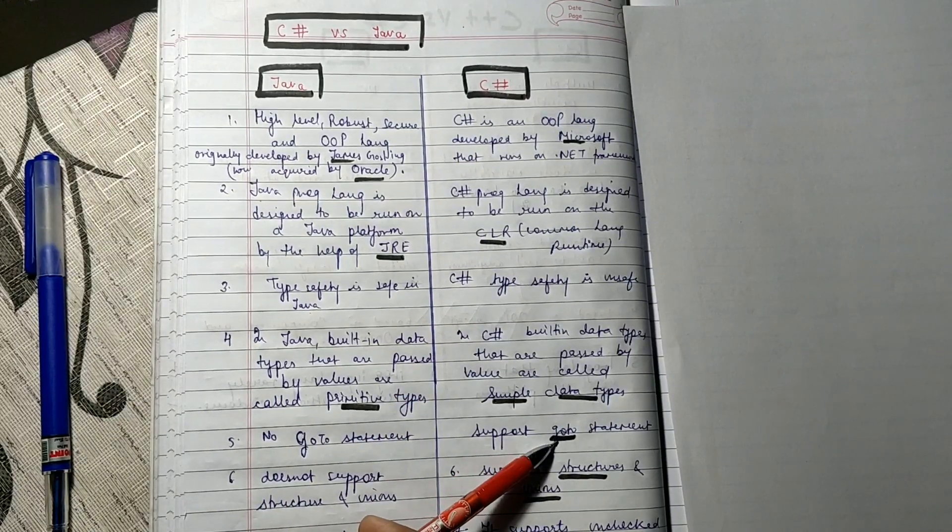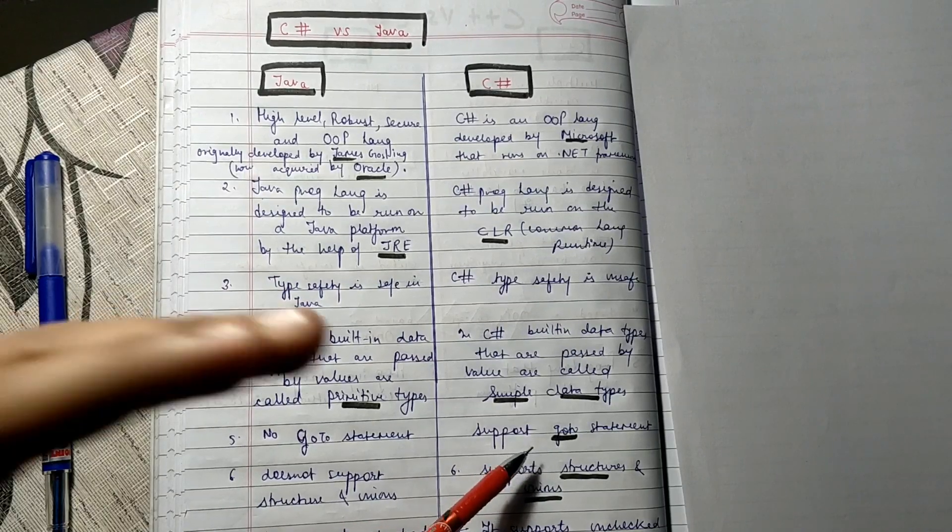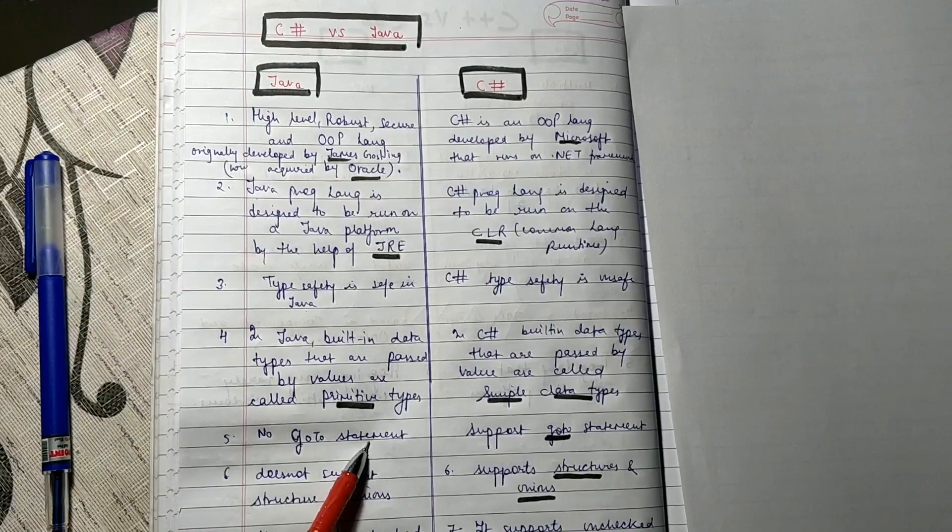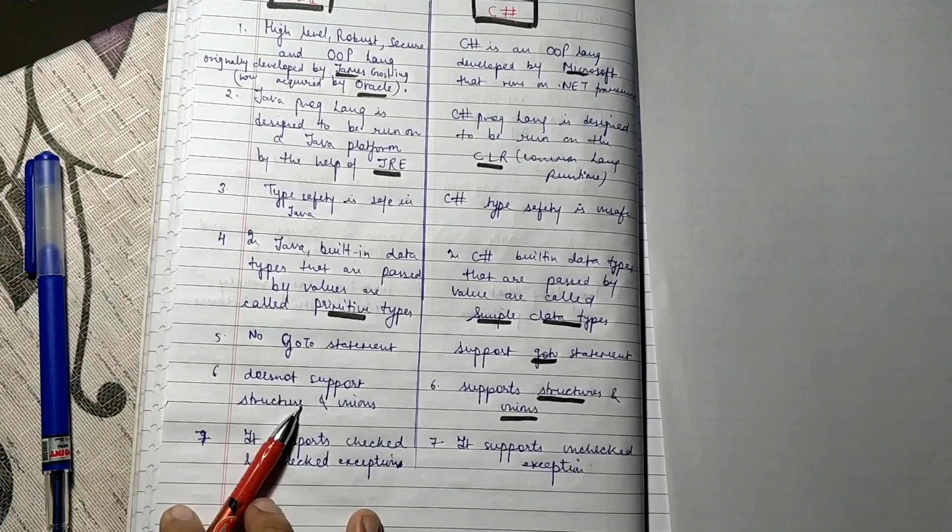In C#, we have goto statement. The option is provided to have goto statement from one part of the program to another part of the program. Java does not have goto statement and does not support such.